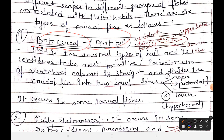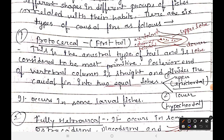In the protocercal type, the posterior end of the vertebral column is straight and divides the caudal fin into two equal lobes. The upper lobe is called epicaudal and the lower lobe is called hypocaudal. The vertebral column or notochord runs straight, and both lobes are equal in size. This is the simplest and most primitive type.